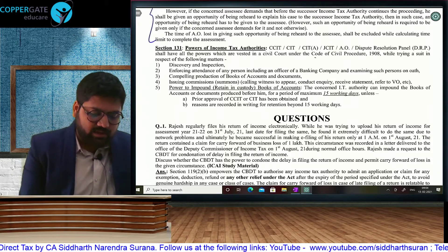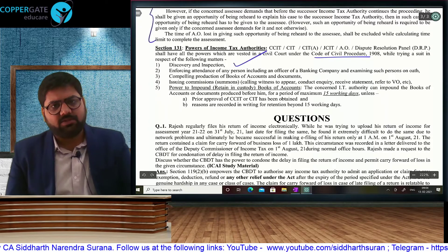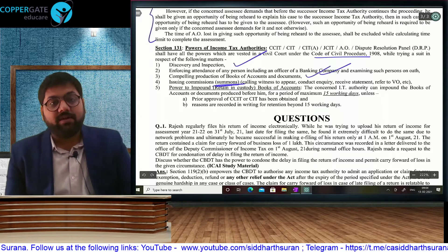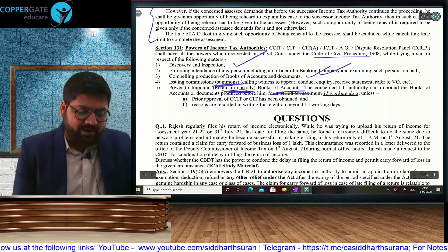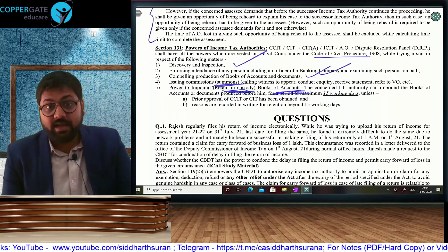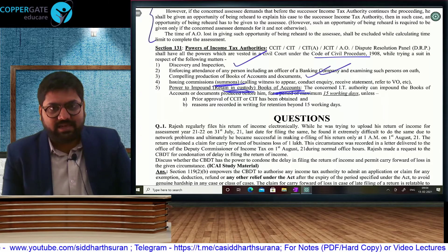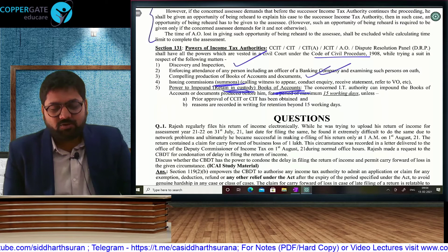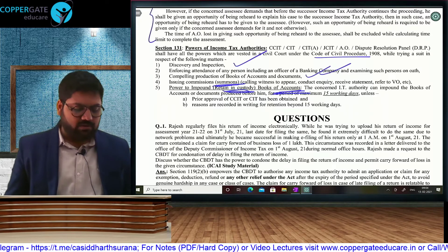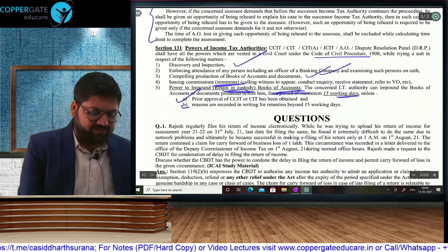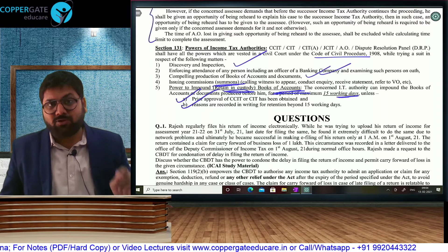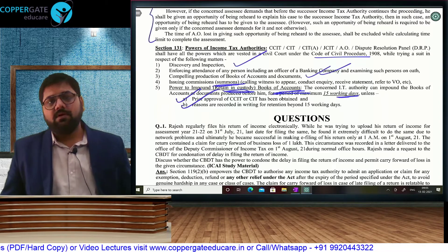Powers of IT authorities are the same as given to a civil court under the Code of Civil Procedure: discovery and inspection, enforcing attendance, production of books of accounts and documents, and giving summons where you have to personally be present. They can take custody only of books of accounts and documents — they cannot take custody of the assessee or assets, cannot arrest you or seize anything. To arrest, there has to be a prosecution proceeding. The power to impound books of accounts and documents is for a maximum of 15 working days, but with prior approval of CCIT and CIT and reasons in writing, it can be retained beyond 15 days. These are powers of IT authorities from CCIT to Inspector.